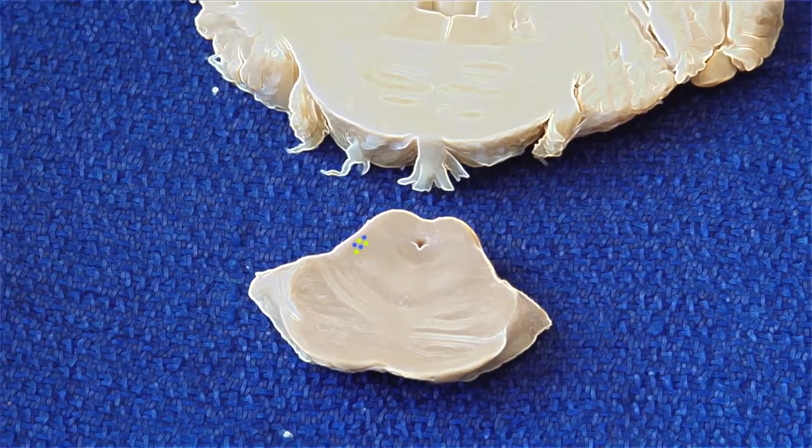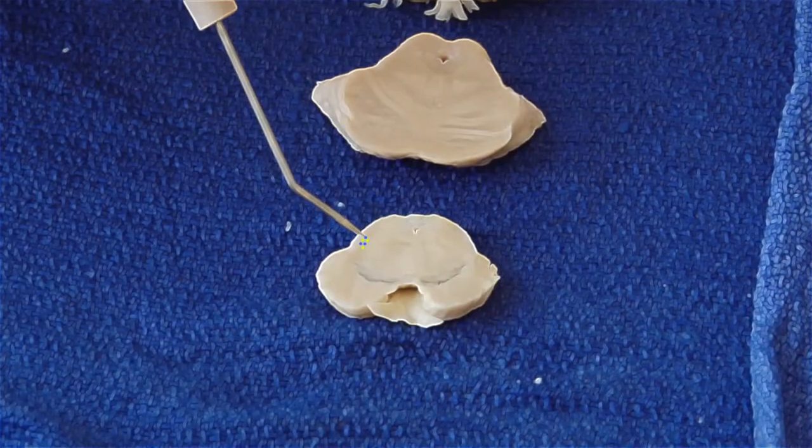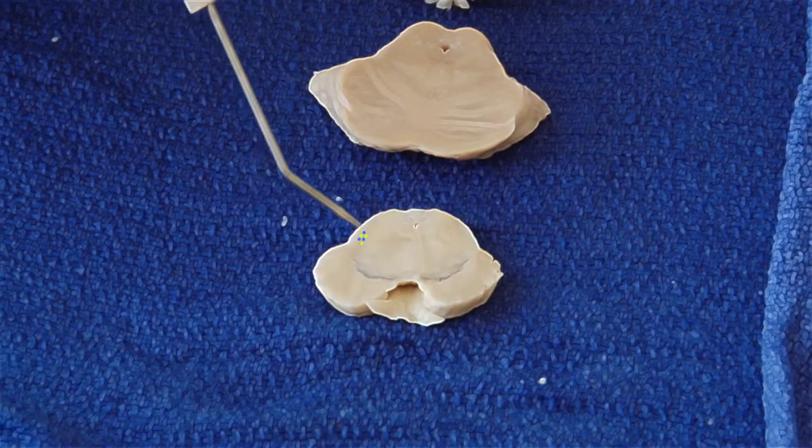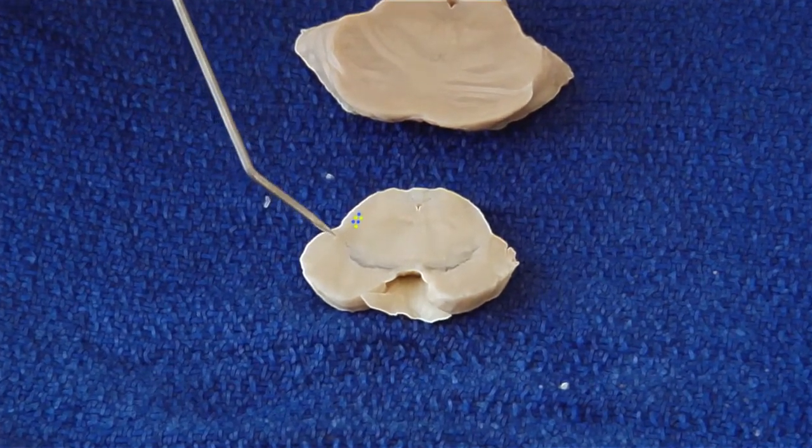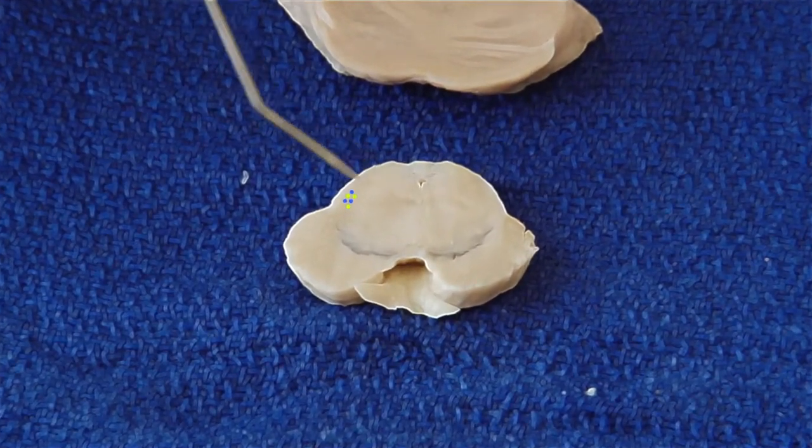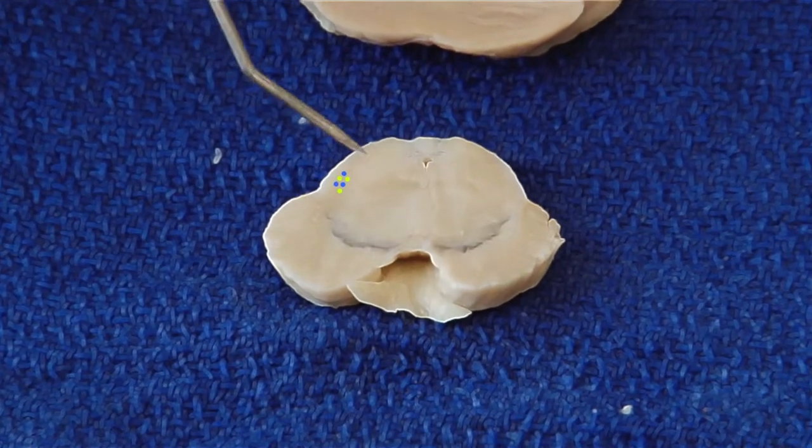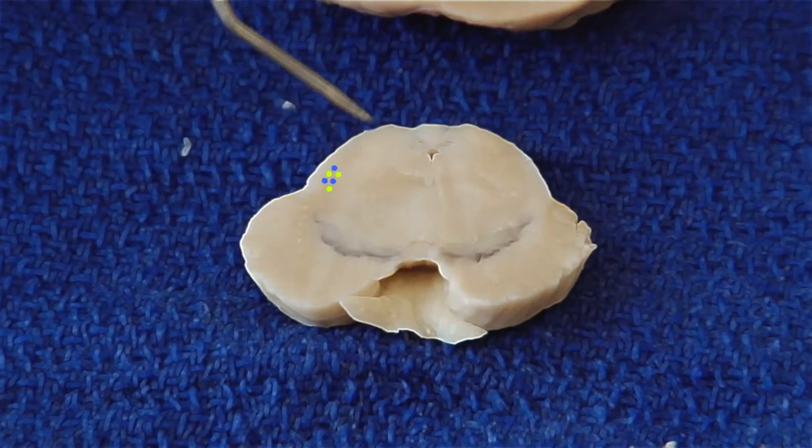One more level up is the midbrain. When we get to the midbrain, our fibers now are right here on the surface, on their way going around the midbrain and onto the thalamus.